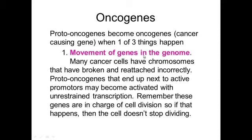One of three things can happen to a proto-oncogene to make it become an oncogene. First, you can have movement of genes in the genome. Sometimes you can have something called a transposon, or a jumping gene, which means a piece of a chromosome is broken off and reattached incorrectly somewhere else. If a proto-oncogene is broken and reattached next to an active promoter region, it can be activated and cause unrestrained transcription, meaning cell division would never stop.